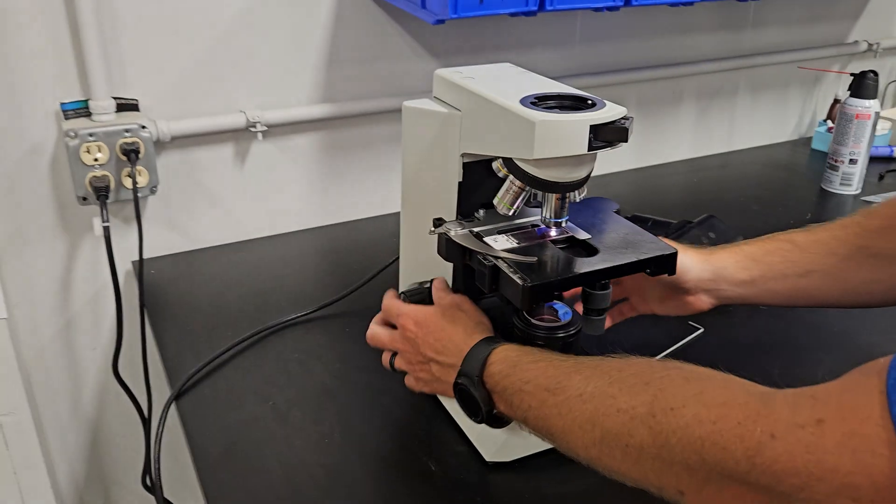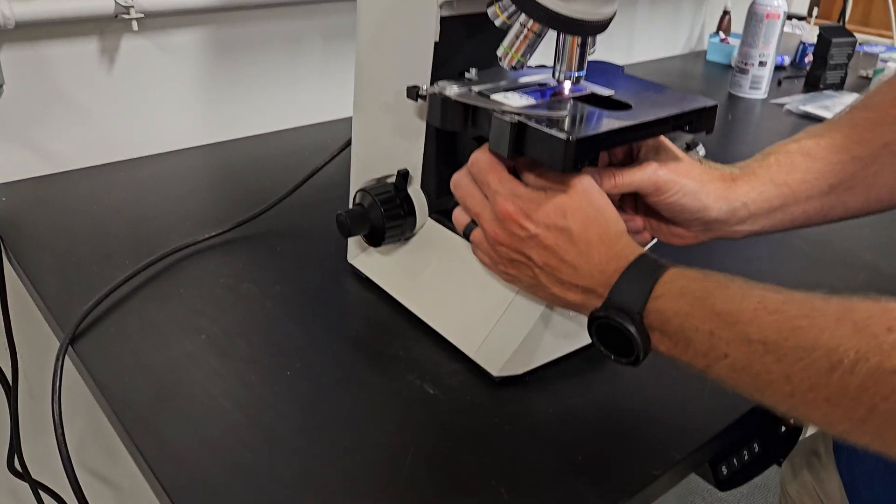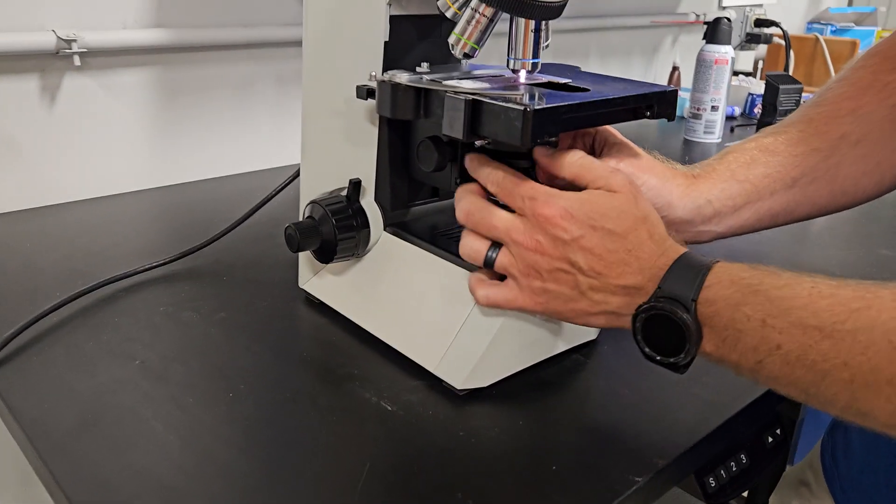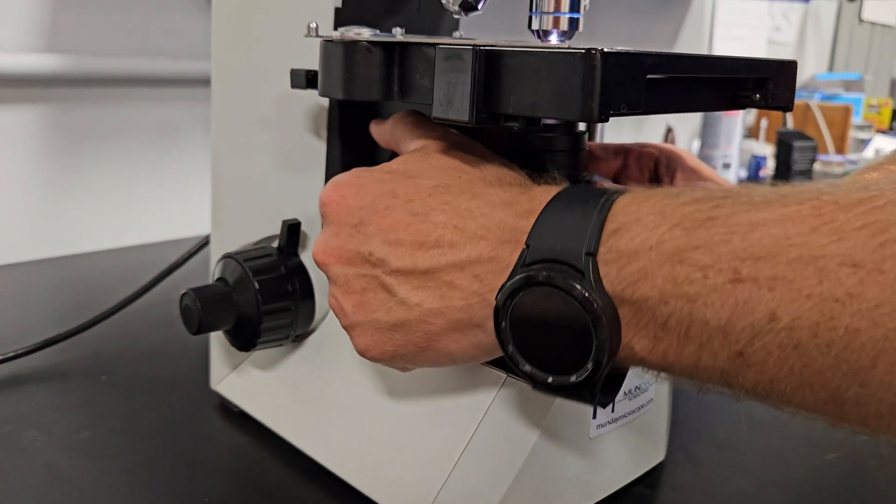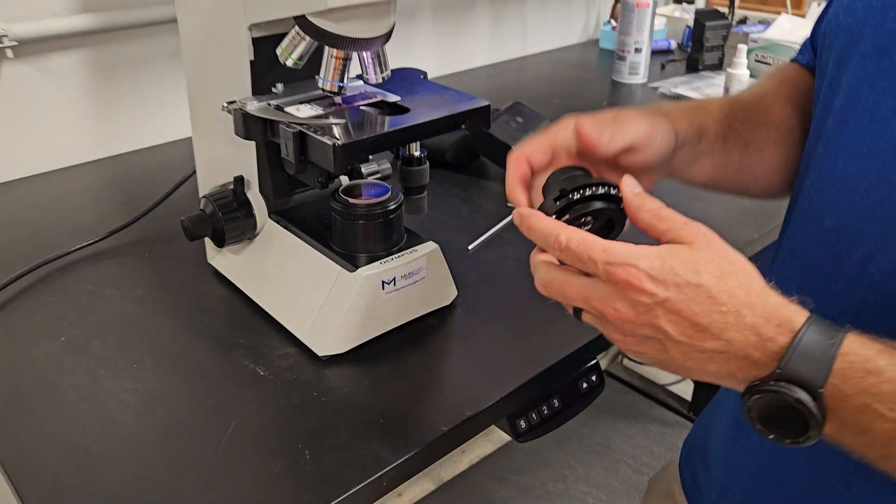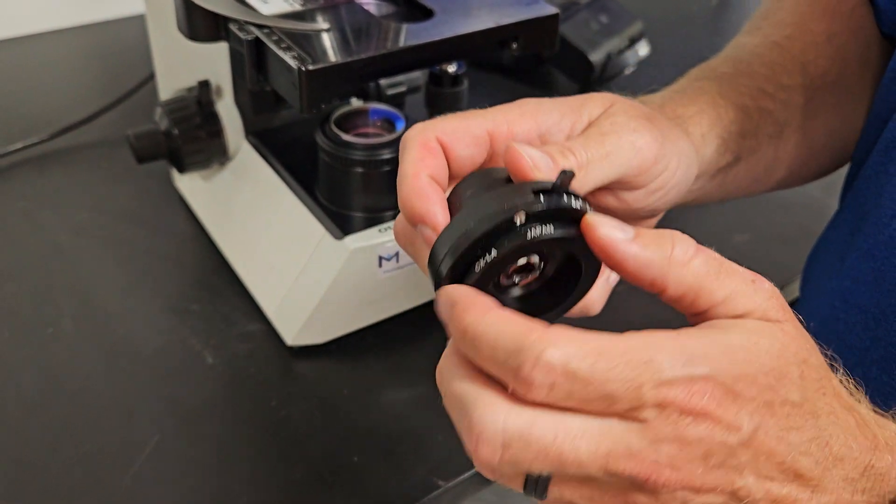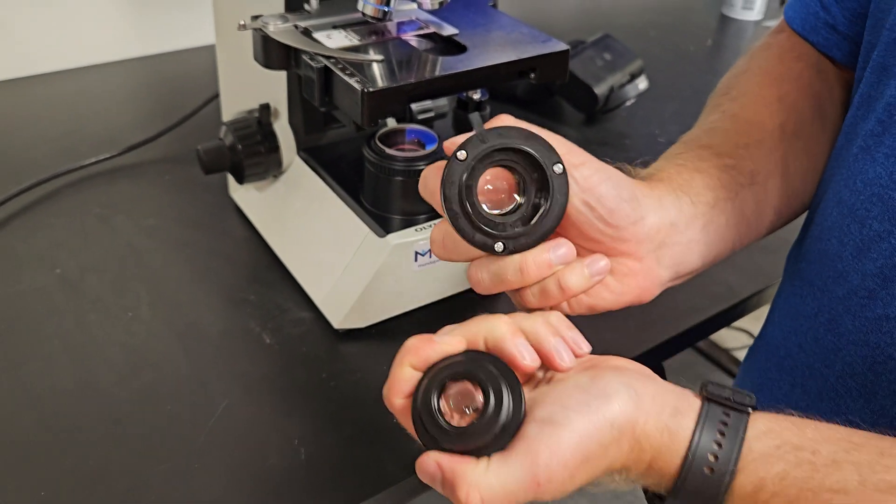We're going to move on with the stage up. We're going to lower the condenser. It's this screw right here that loosens the condenser. Whenever you get a CX, if you want to put a 2x on there, you have to have this lens. CX-LA. It snaps in the bottom.